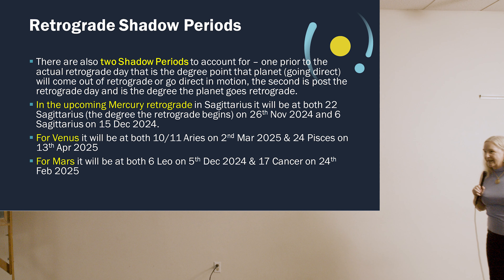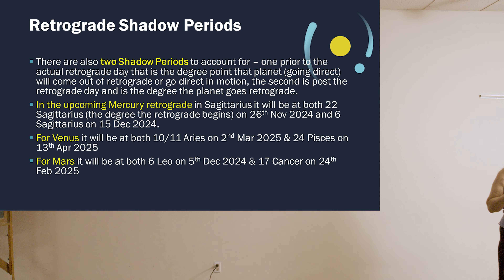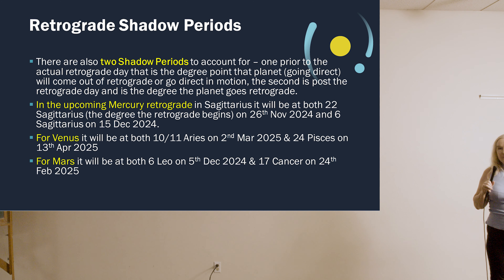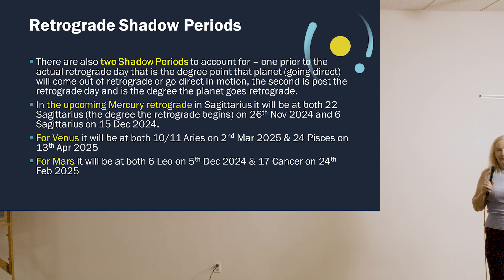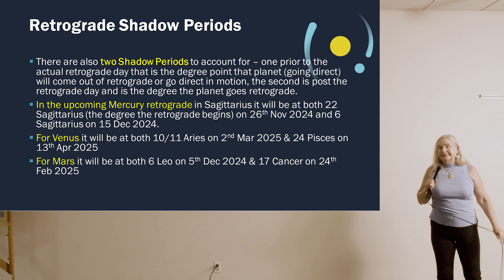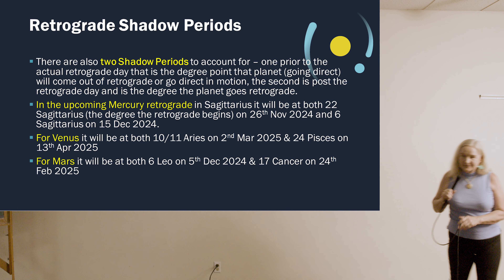How many people have found that the shadow periods really play into a retrograde? If any of these three retrogrades aspect something in your chart, have you noticed the shadow period also? Audience: This last Mercury retrograde just killed me — it was one of the worst I've ever experienced. It seems like it's still continuing on.